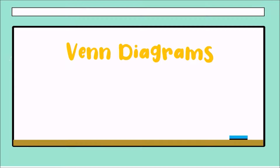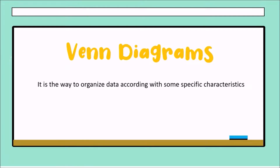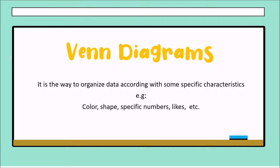Hello guys! Today we are going to talk about Venn Diagrams. What is a Venn Diagram? It is a way to organize data according to some specific characteristics. For example, color, shape, specific number, lights, etc.